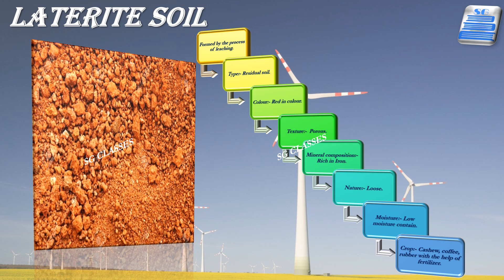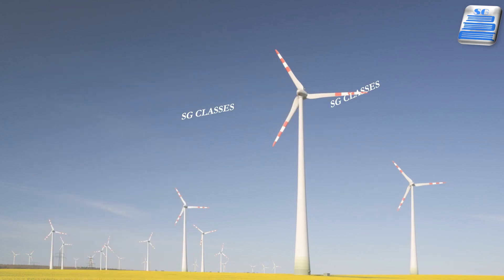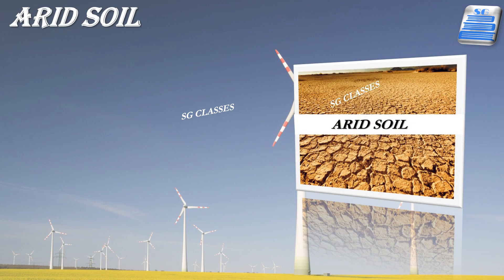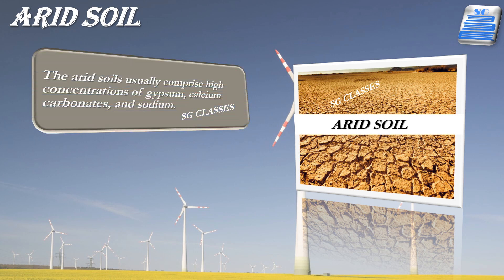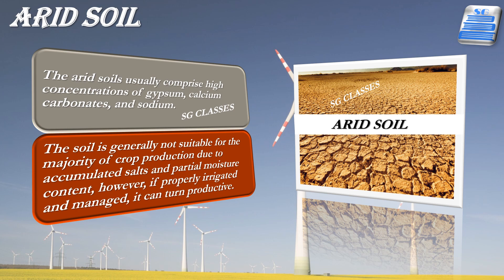Arid soils range from red to brown in color, are generally sandy in texture and saline in nature. In some areas, the salt content is very high and common salt is obtained by evaporating the water. Arid soil lacks humus and moisture. The lower horizons are occupied by kankar due to an increase in calcium content downwards, and this kankar layer restricts infiltration of water.